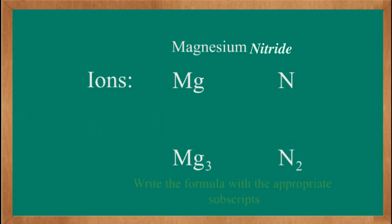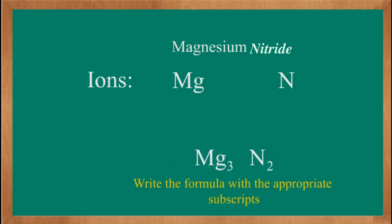Write the formula with the appropriate subscripts. This is magnesium nitride, Mg₃N₂.